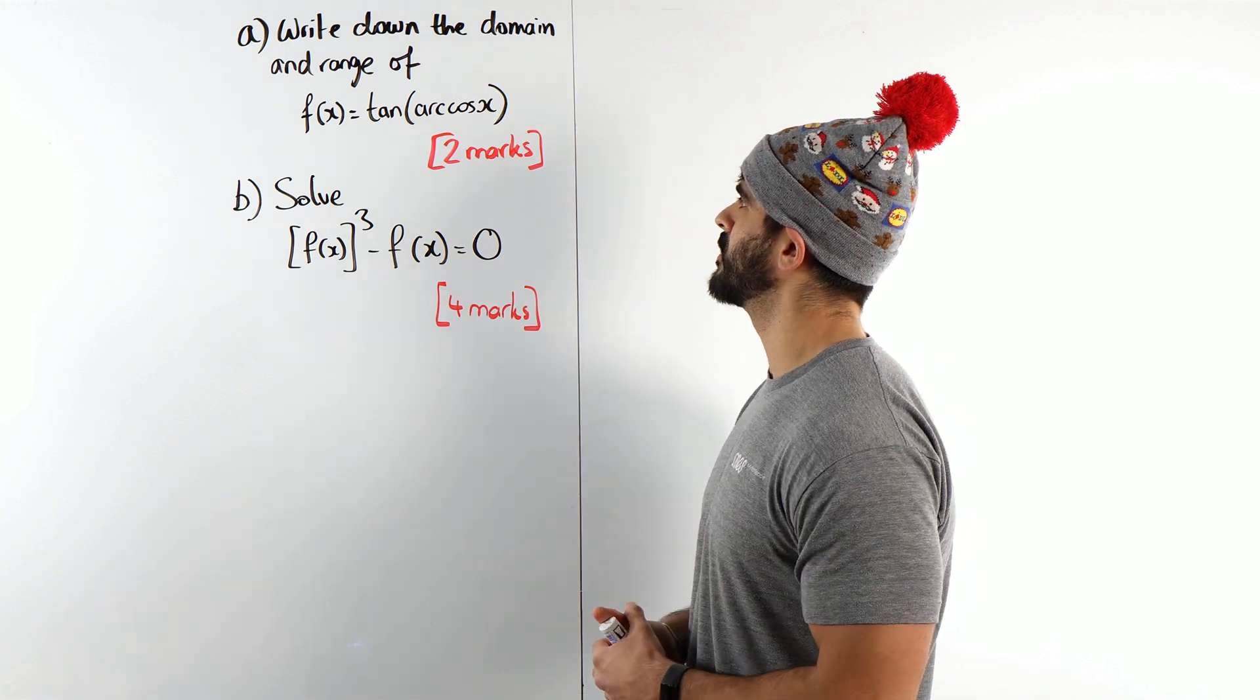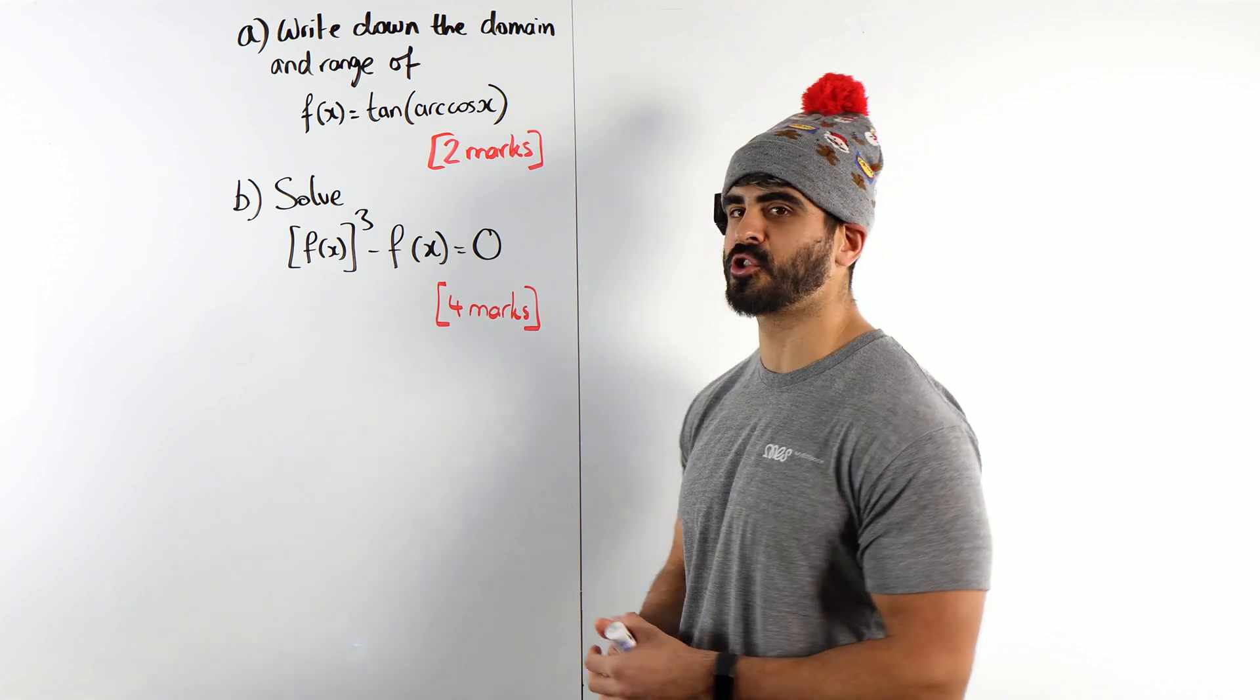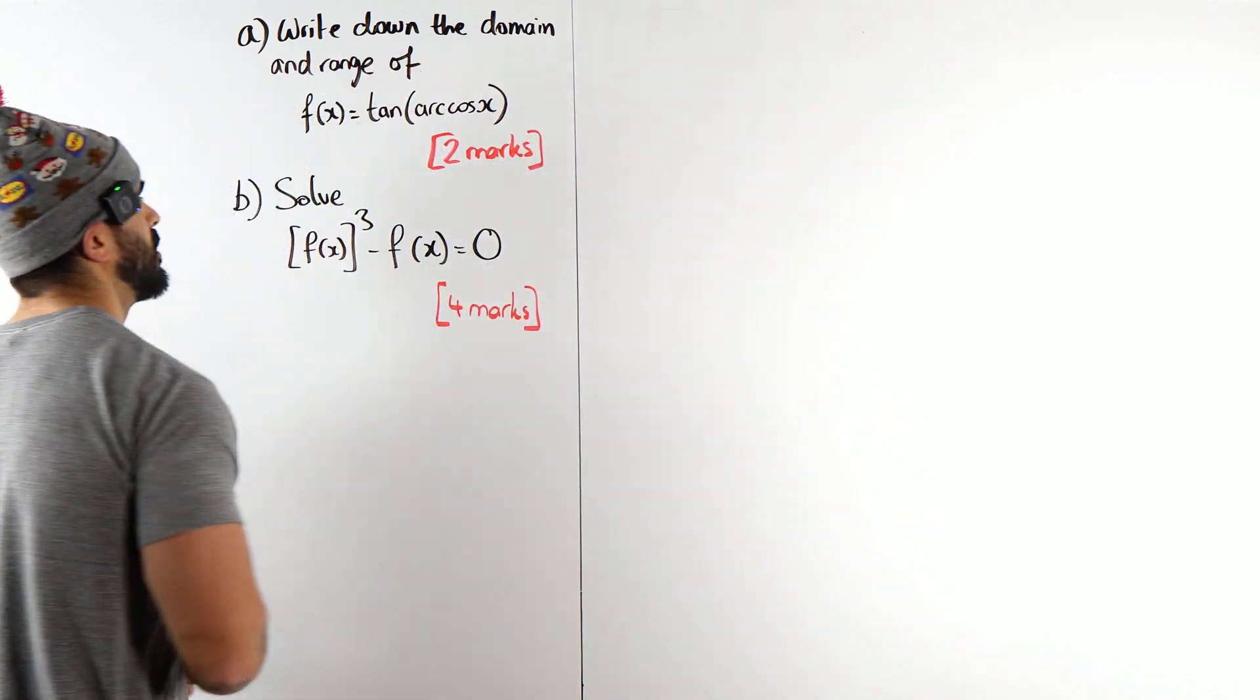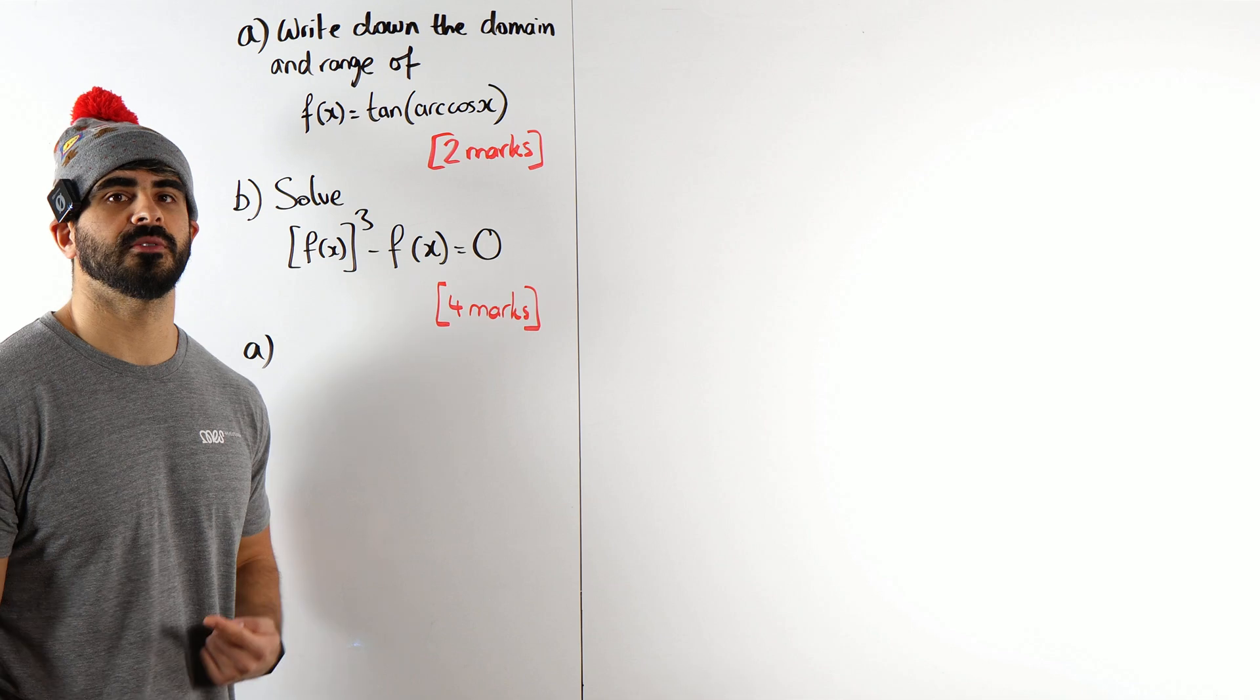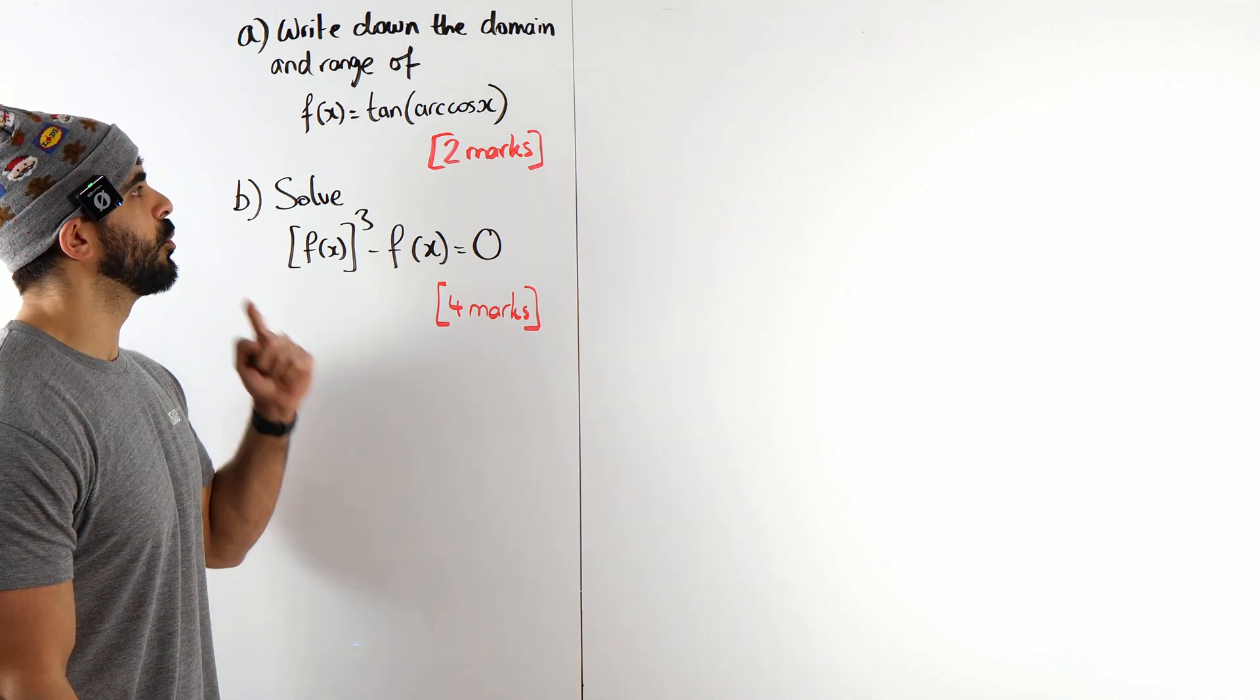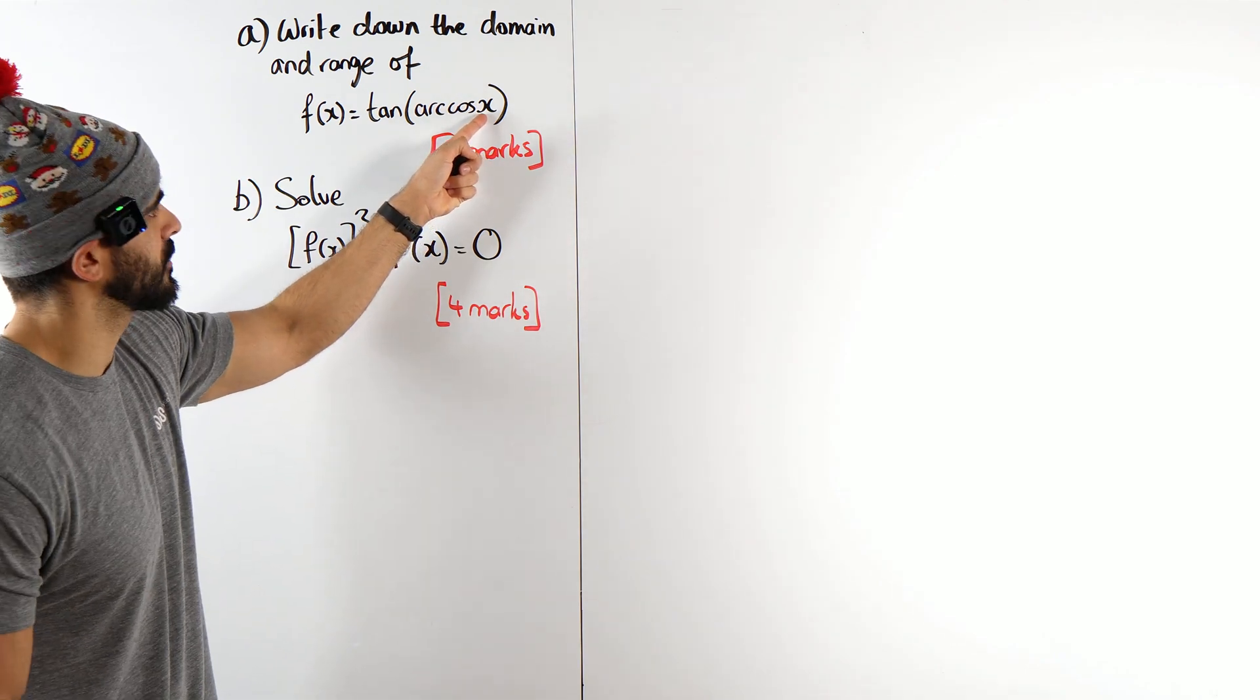So it says write down the domain and range of f(x) = tan(arccos(x)) only for two marks. Alright, well anything to do with domain and range we should be doing a sketch. So we need to think about this in terms of a process though, in terms of the domain, you're just thinking about what values of x are you allowed to substitute.